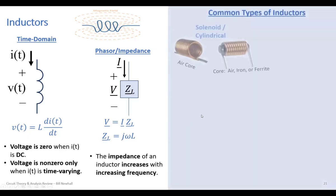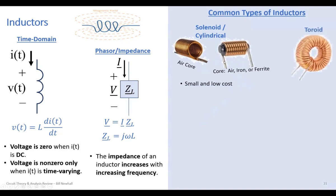Here are some common types of inductors. An air core inductor — you can wind inductors easily by taking magnet wire with enamel insulation and winding it with an air core. You can also put in an iron core or ferrite core. These are typically small and low cost.